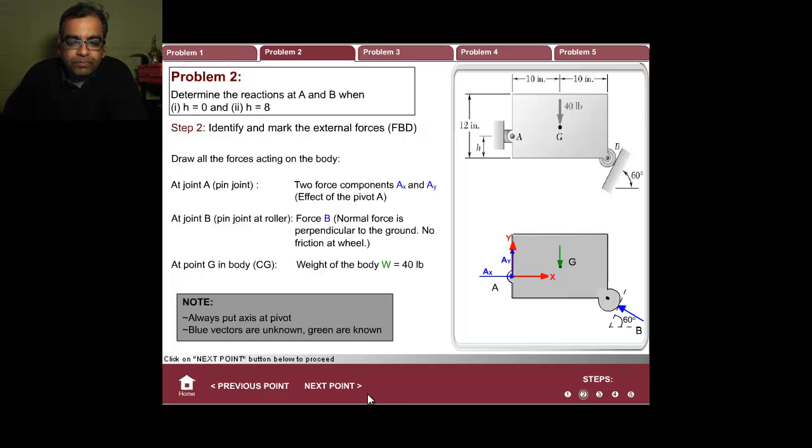Just remember, always put the axis at the pivot—it will save you a lot of time. Blue arrows are unknown, green are known.